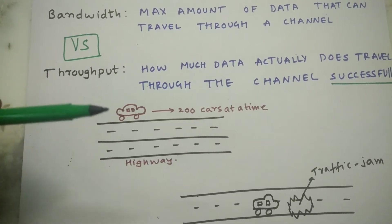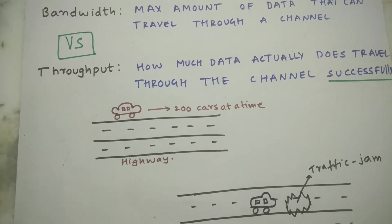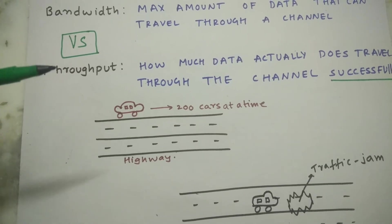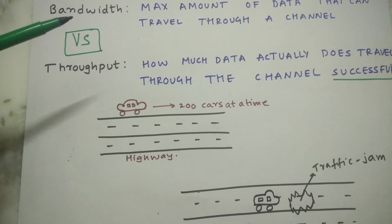now the channel M allows N minus K number of packets to flow through it. So the throughput is N minus K and the bandwidth is N packets.